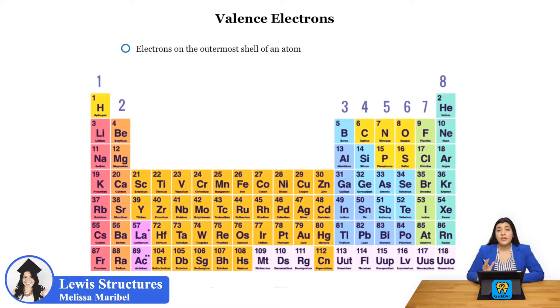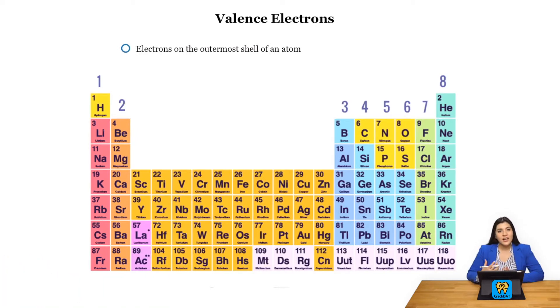Let's start off with identifying our valence electrons for every single element. This is going to help us be able to draw Lewis structures properly. Remember that valence electrons are just electrons on the outermost shell of an atom.